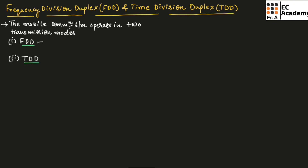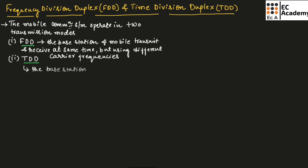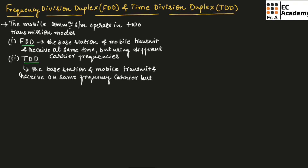In Frequency Division Duplex, the base station and mobile transmit and receive information at the same time but using different carriers. In Time Division Duplex, the base station and mobile transmit and receive the signal on the same frequency carrier but at different times.